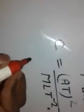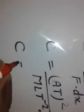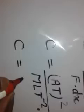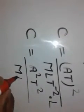The dimensional formula of capacitance equals [A²T²] upon [ML²T⁻²]. We can rewrite this as [A²T⁴M⁻¹L⁻²].